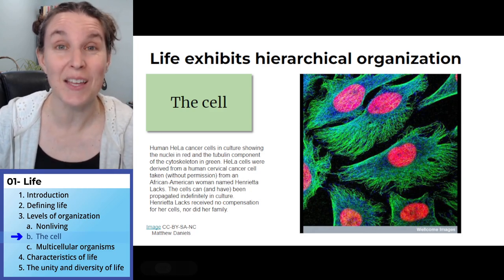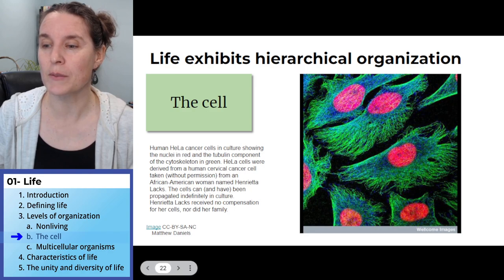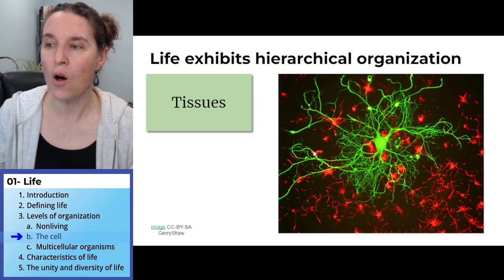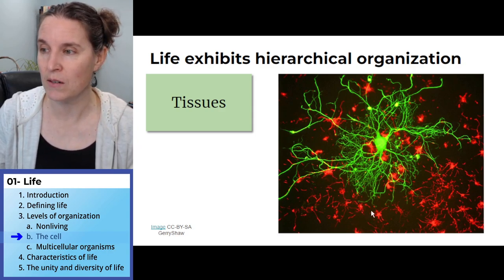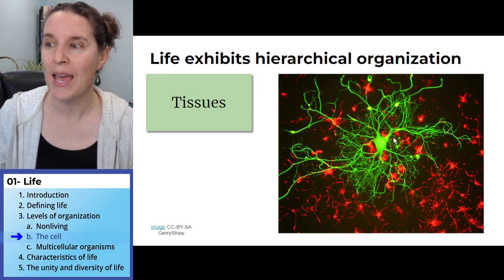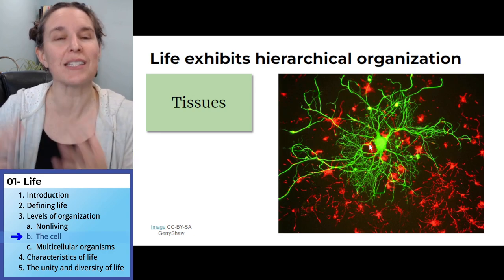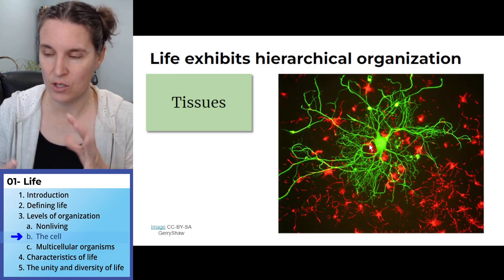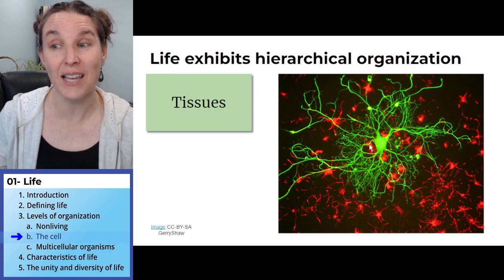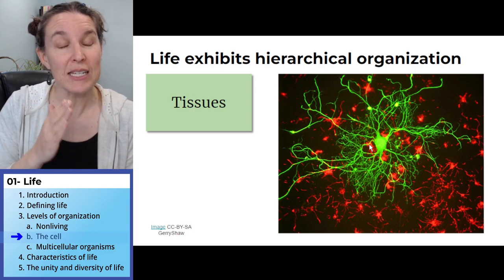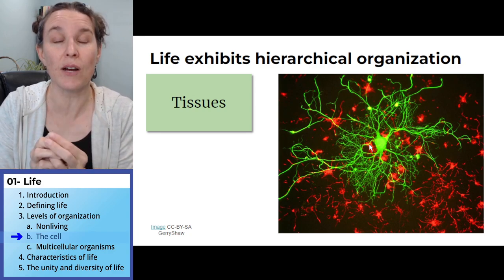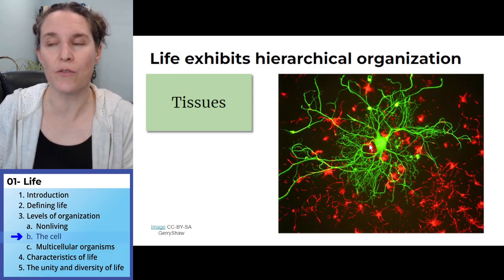Here's another view, this time with multiple cells. All the red dots are cells, and the big green one is a different kind of cell. These are all cells found in your brain — nervous system cells. Tissues are when different kinds of cells get together and work together for a common function.